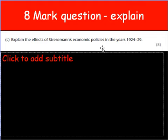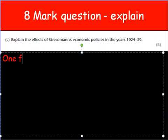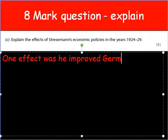Now we know that Stresemann was different. He was the guy who came up with the plan that really got Germany out of trouble in the 1920s, before the Great Depression kind of ruined everything. So what did he do? What were some of the effects of his policies? Well, one effect we might know was he improved Germany's economy — quite a general point, but still one that fits the question.